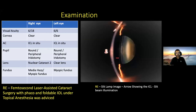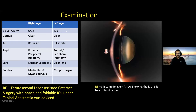During examination of the right eye, visual acuity was around 6/18, with a clear cornea. The anterior chamber showed the ICL in-situ, the pupil was round, and a peripheral iridotomy was present. The lens had nuclear sclerosis grade 2, and the fundus showed hazy media with a myopic fundus. The left eye had good vision of 6/6, clear cornea, ICL in-situ, peripheral iridotomy, and a clear lens with a myopic fundus.